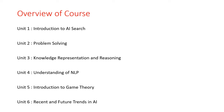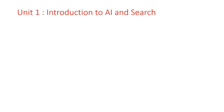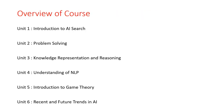Unit 2 is based on problem solving. Unit 3 is based on knowledge representation and reasoning. Unit 4 is based on understanding of NLP, that is natural language processing. Unit 5 is based on introduction to game theory. And Unit 6 is based on recent and future trends in AI.